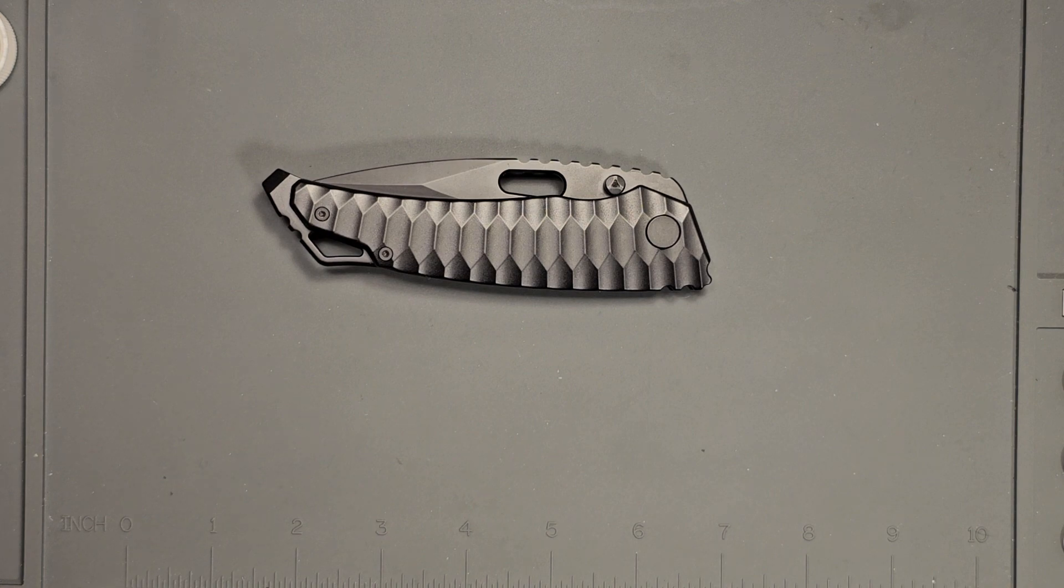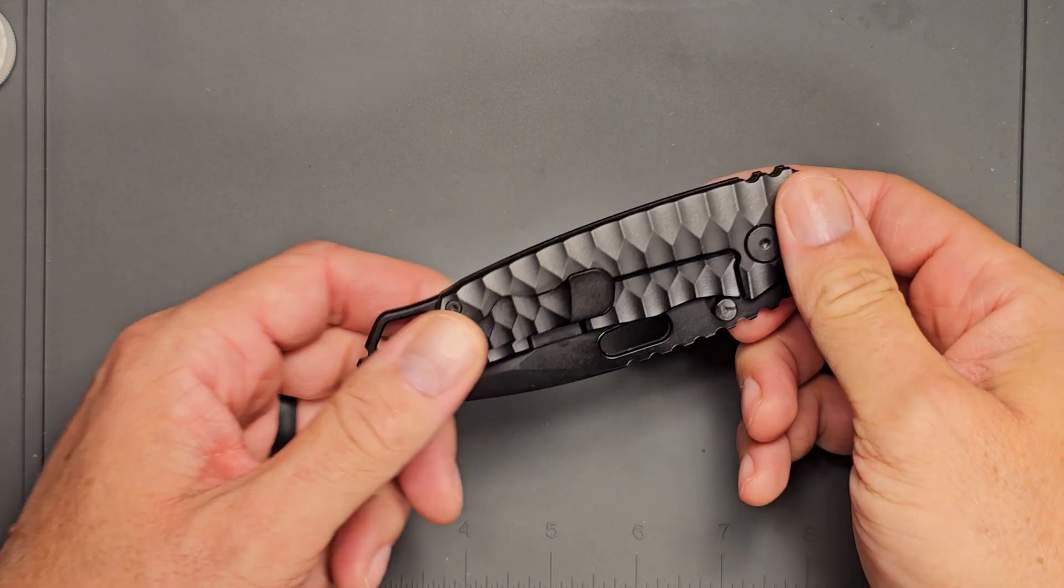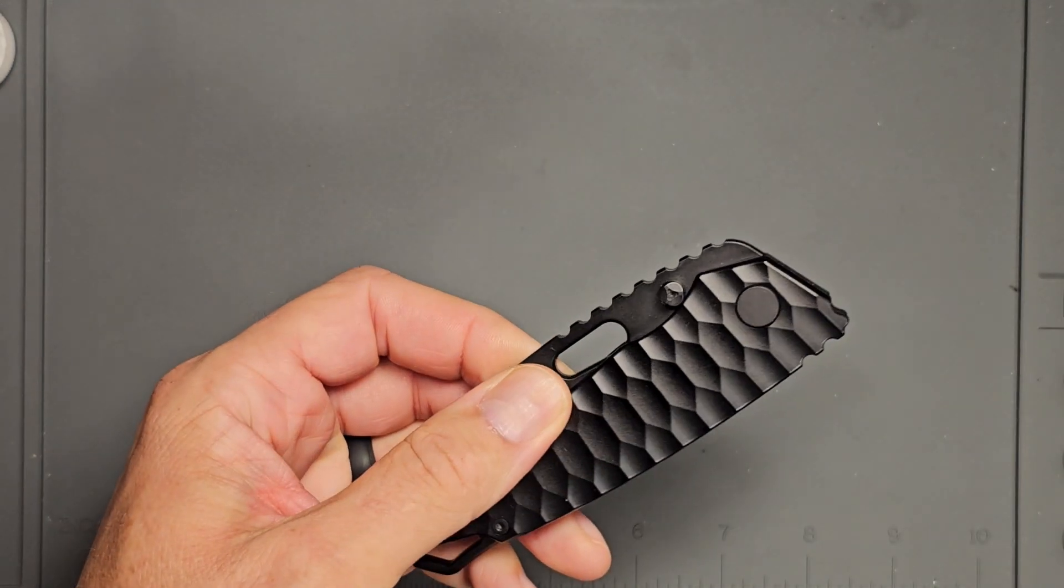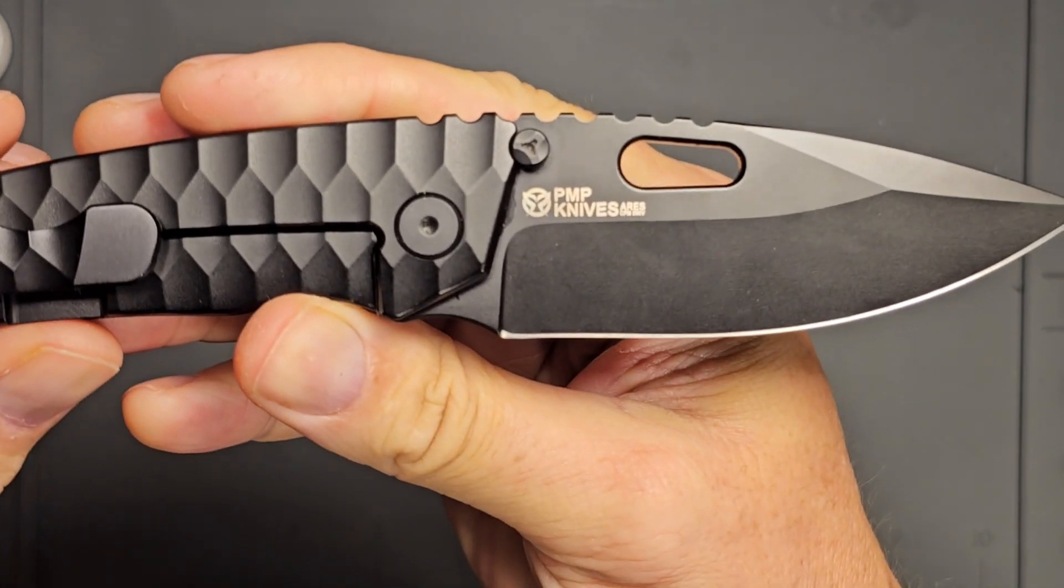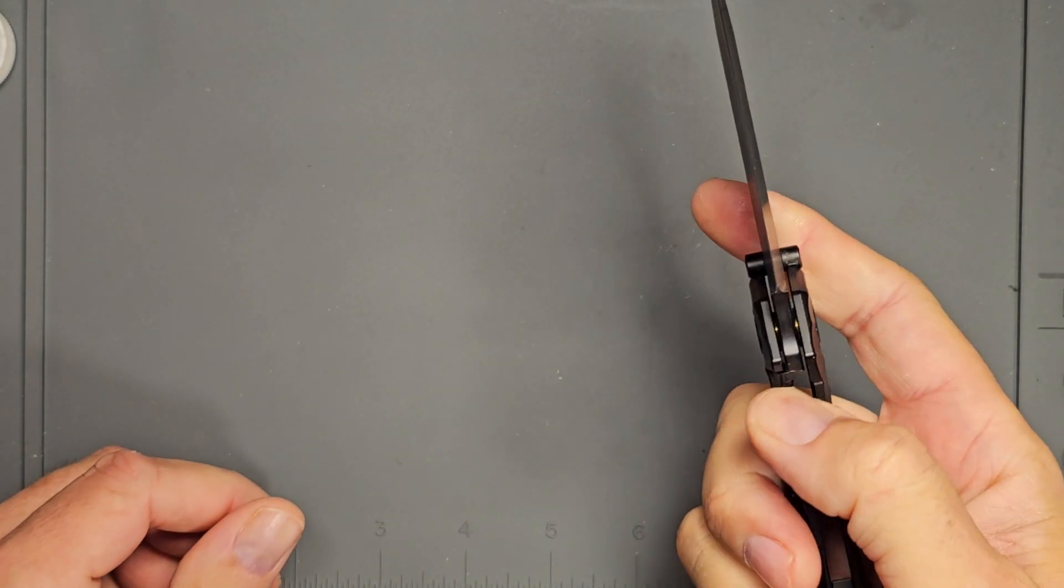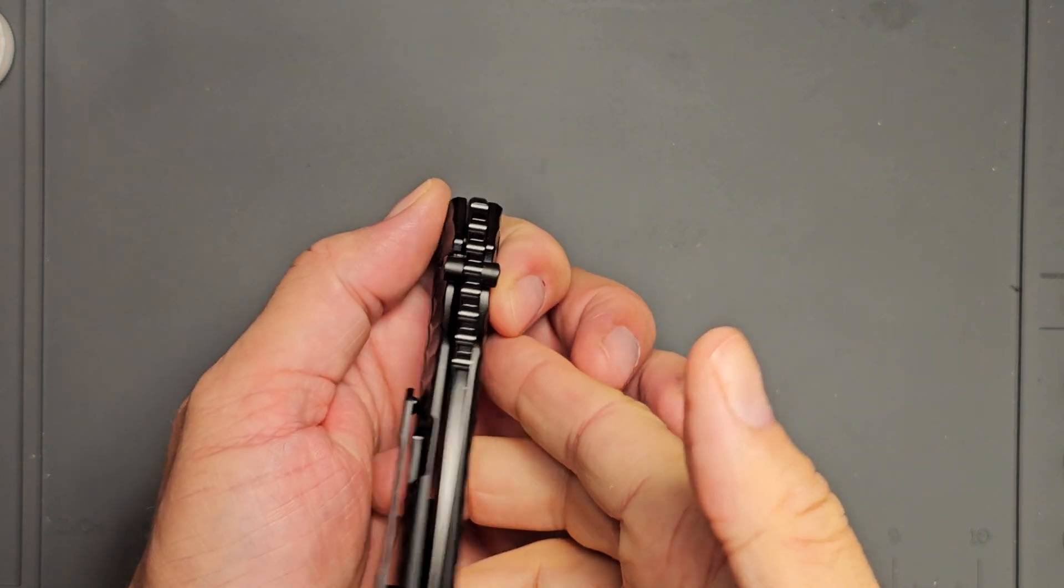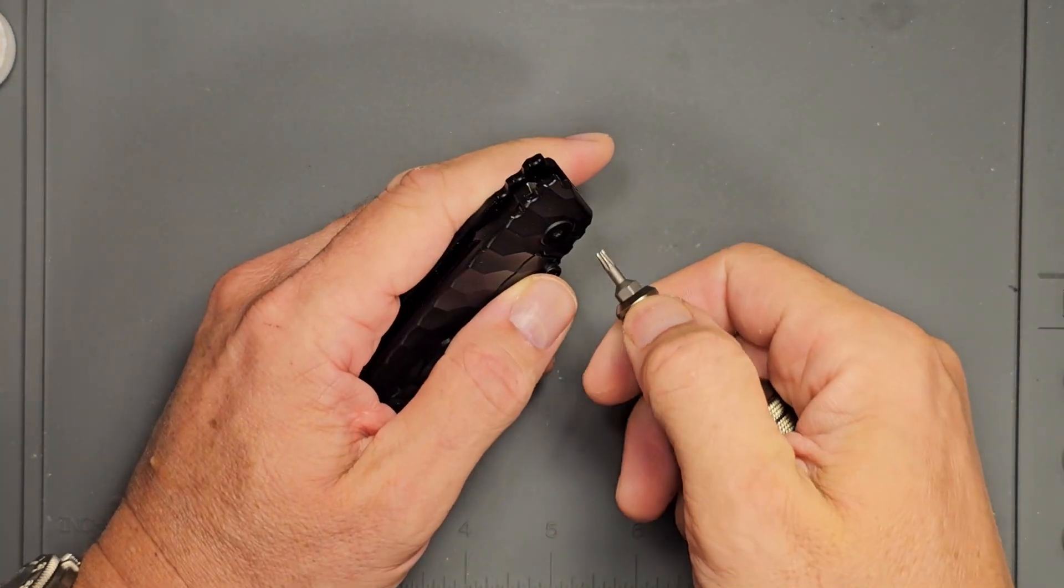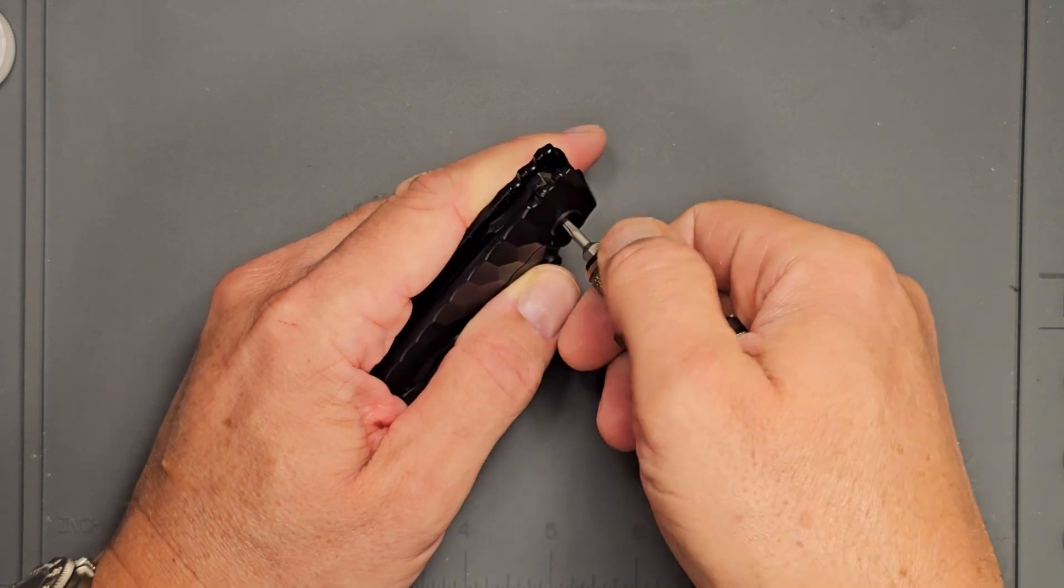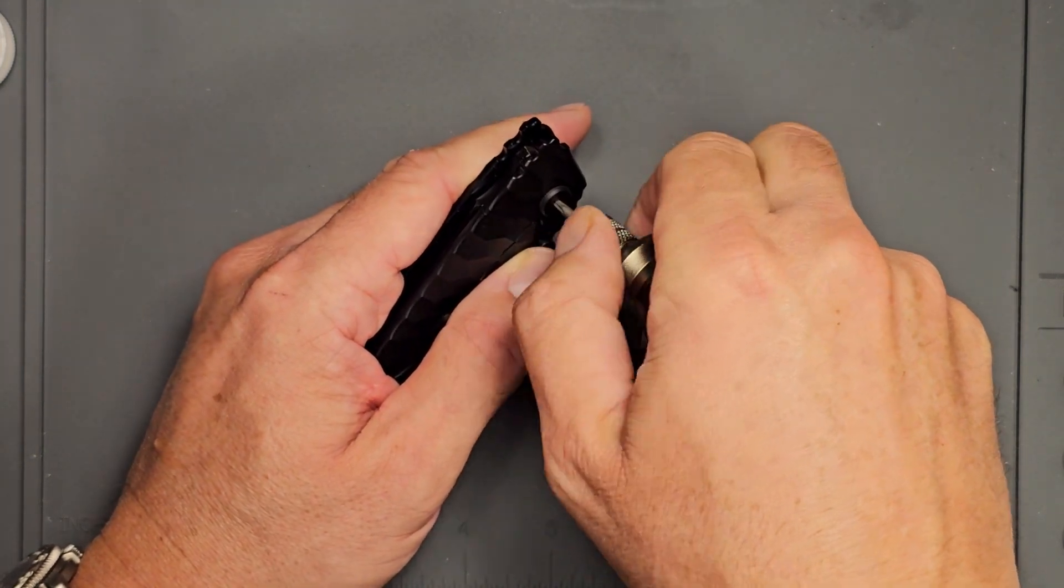Welcome back folks, this is Tommy Help with Gadgets and we have an interesting knife to do a disassembly and cleaning on. This is the PMP Aries. This one's another one of the knives that's on loan from Mr. Eddie, so let's go ahead and get this one apart and take a look at it.